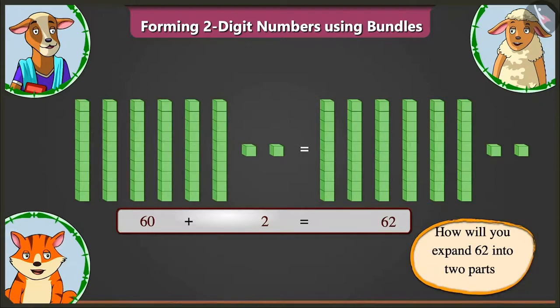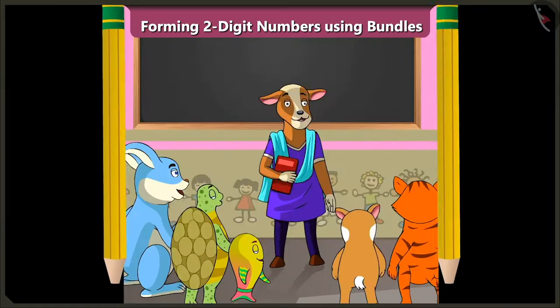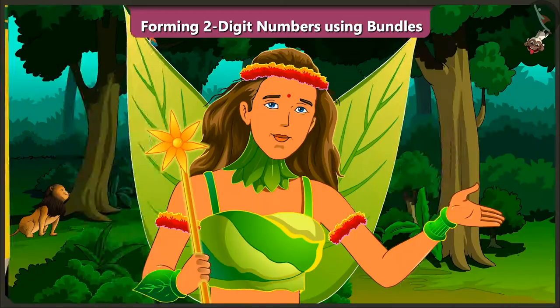Now, how will you expand sixty-two into two parts? Sixty-two means six tens and two ones. That means, the two parts will be sixty and two. Absolutely right, Billy.